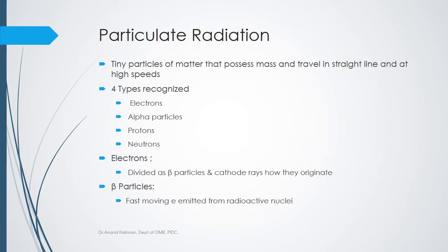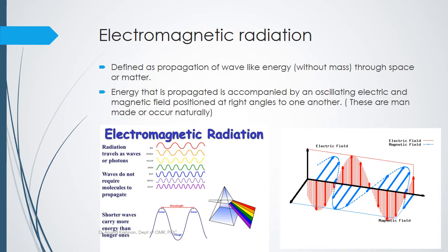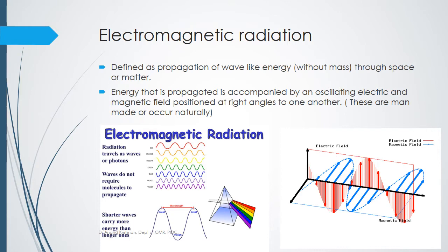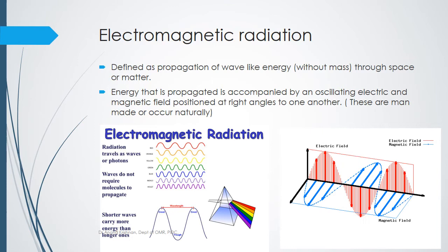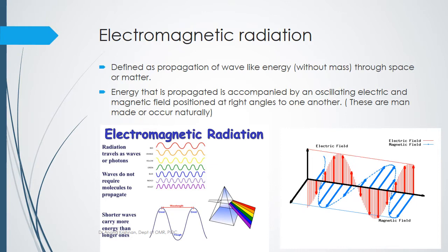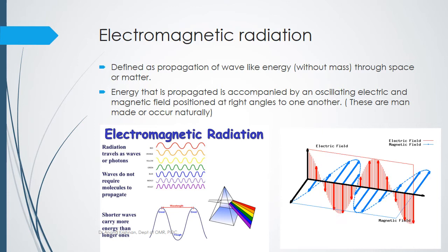Particulate radiation can be either ionizing or non-ionizing depending on energy or ability to penetrate. Moving on to electromagnetic radiation — in the latter part of the 19th century, physicist James Maxwell put forth electromagnetic theory, stating that electric and magnetic fields alternatively travel in a wavy pattern, similar to alternating current. He explained that electromagnetic radiation has no mass and carries energy in waves.